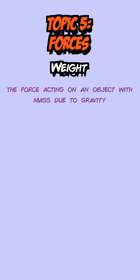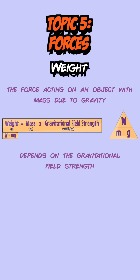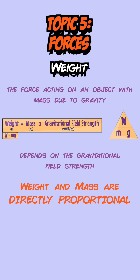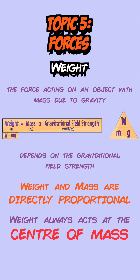Weight is the force that acts on an object with mass due to gravity. It depends on the gravitational field strength of the planet and can be worked out with the weight equation. Weight and mass are directly proportional, so if you double the mass you double the weight. Weight always appears to act at a single point on an object known as the object's center of mass.